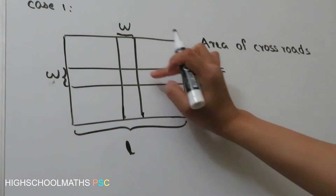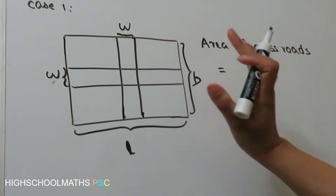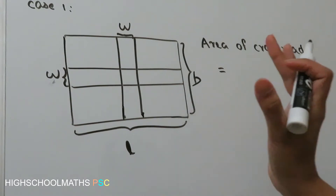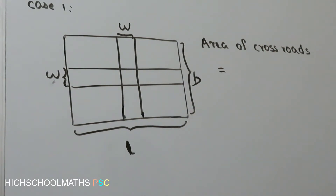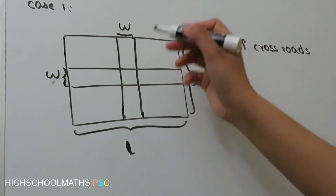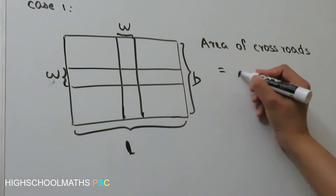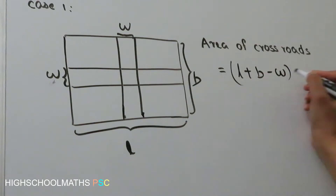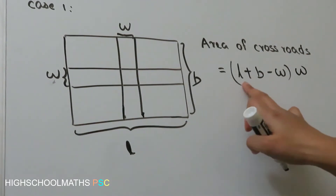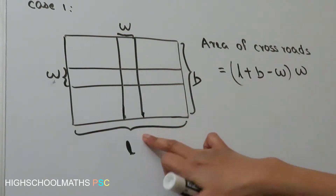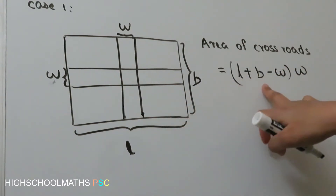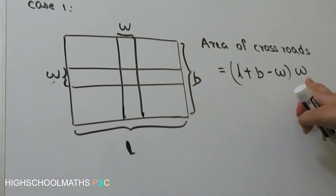Now, these are the 2 roads. If you are doing this road, you will have the total area of this road. The formula is L plus B minus W, into W. You can add a plot in the square, and you can add W into W.